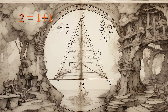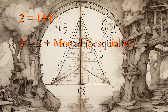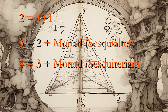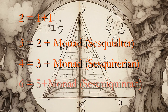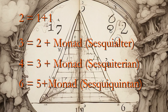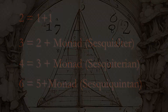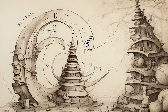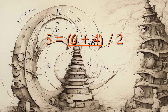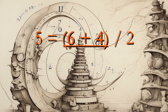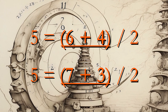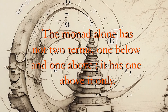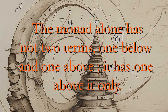Thus, two is one plus one, or double its predecessor. Three is not double two, but two and the monad — sesquialta. Four to three is three and the monad, and the ratio is sesquitarian. The sesquiquintin six to five is also less than its forerunner, the sesquiquarton five and four, and so on throughout the series. They also noted that every number is one half of the total of the numbers about it in the natural series. Thus, five is half of six plus four, and also the sum of the numbers above and below this pair — five is also half of seven and three, and so on until unity is reached. For the monad alone has not two terms, one below and one above; it has one above it only. Hence, it is said to be the source of all multitude.